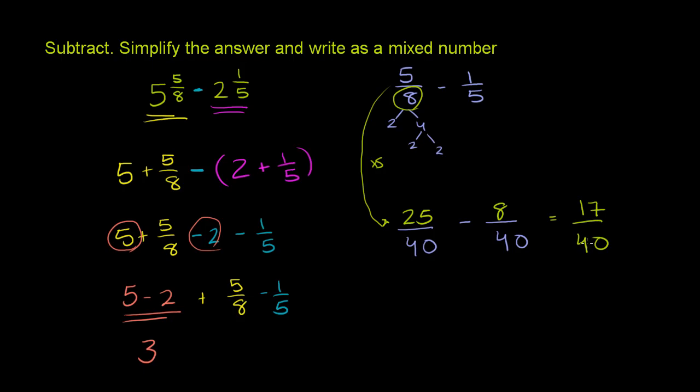So the whole number part is 3 and the fraction part is 17 over 40. And we're done. And this worked. We were able to separate this out and do it pretty straightforward because in this situation, the fraction part that we're subtracting from was smaller. If it was larger, it would have gotten a little bit messy. That's why sometimes it's easier to go straight to an improper fraction for both of them. But in this case, it worked out doing it this way.